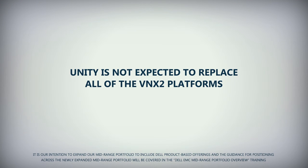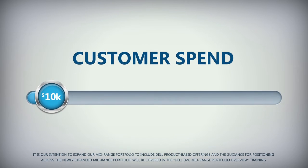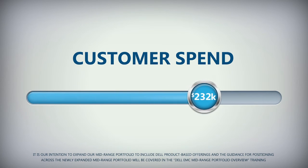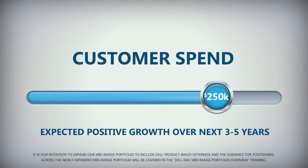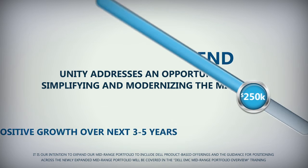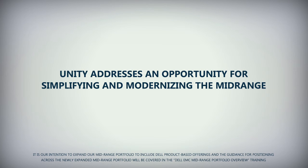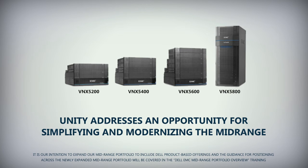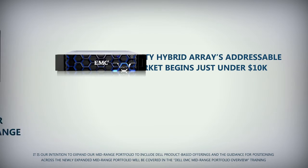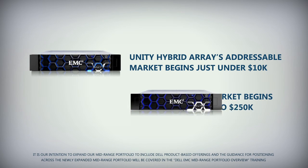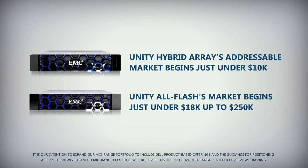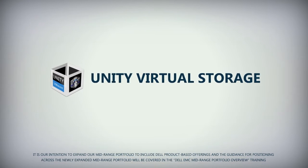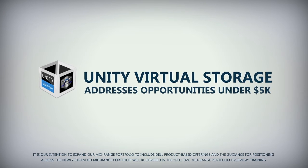Unity is not expected to replace all of the VNX2 platforms. Rather, it was designed to address customers who spend just under $10,000 and up to $250,000, where we expect to see positive growth over the next three to five years. Unity addresses an opportunity for simplifying and modernizing the mid-range, where older VNX technology such as the VNX5200 through VNX5800 systems have resided for the past four years. Unity Hybrid Array's addressable market begins just under $10,000, Unity All-Flash's market begins just under $18,000 and ranges up to $250,000, and Unity VSA addresses opportunities under $5,000.